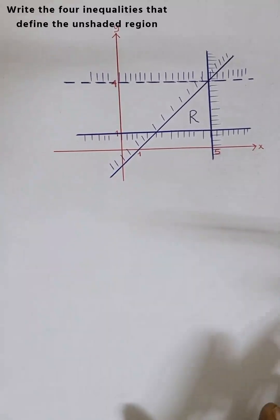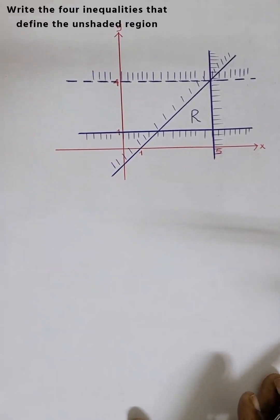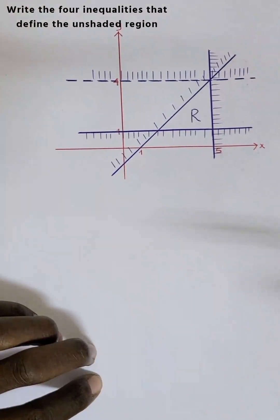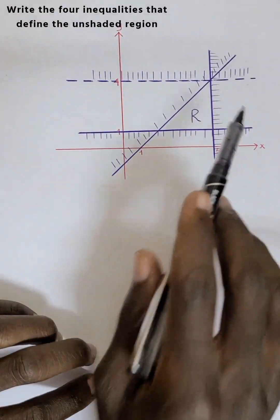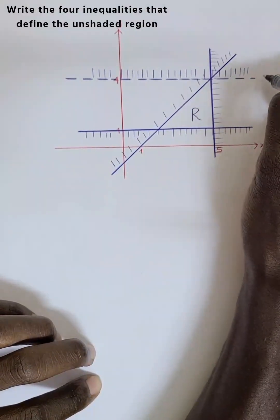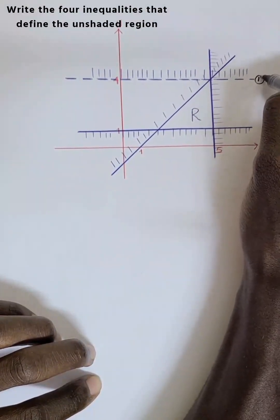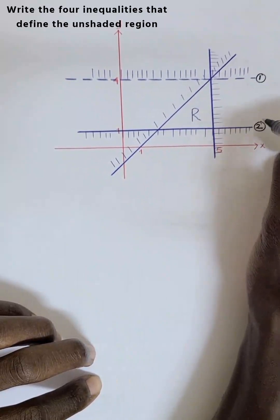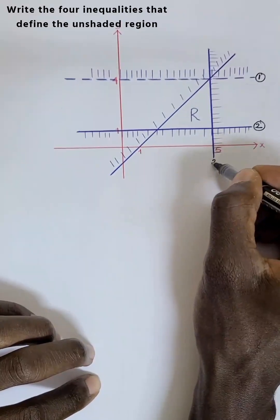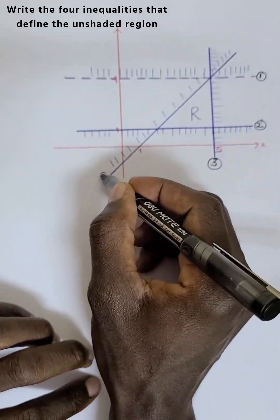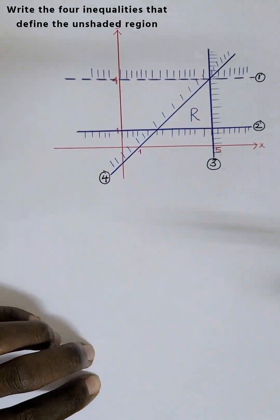Let us answer this question where we identify all four inequalities being shown. The first thing is to pick the simplest ones. Let me call this one line one, this one line two, this one line three, and this one line four. We are going to answer them in that order.